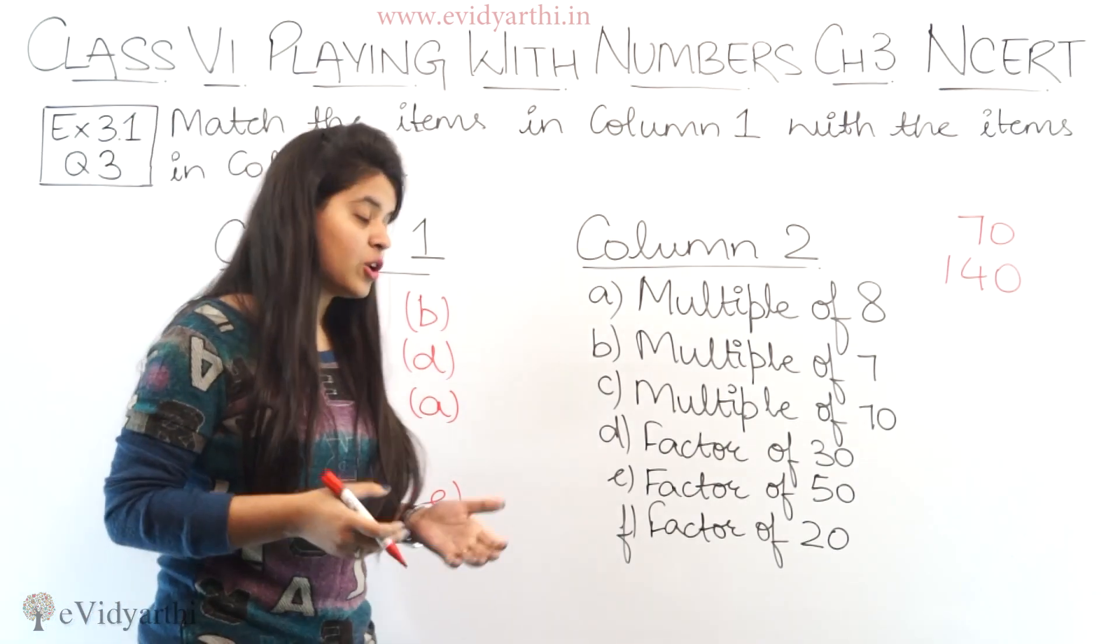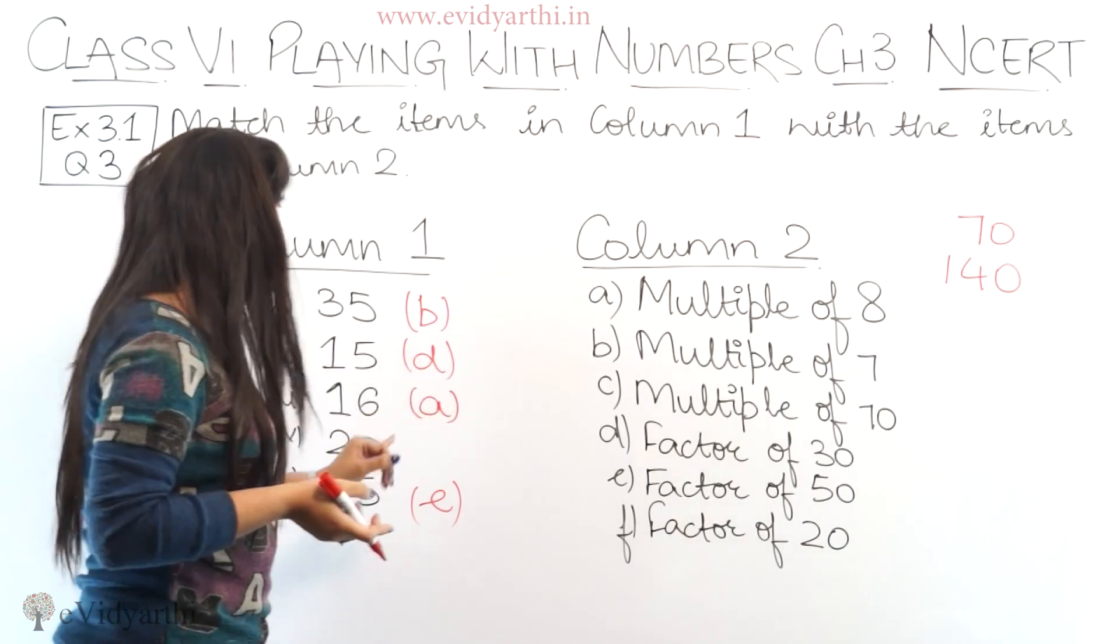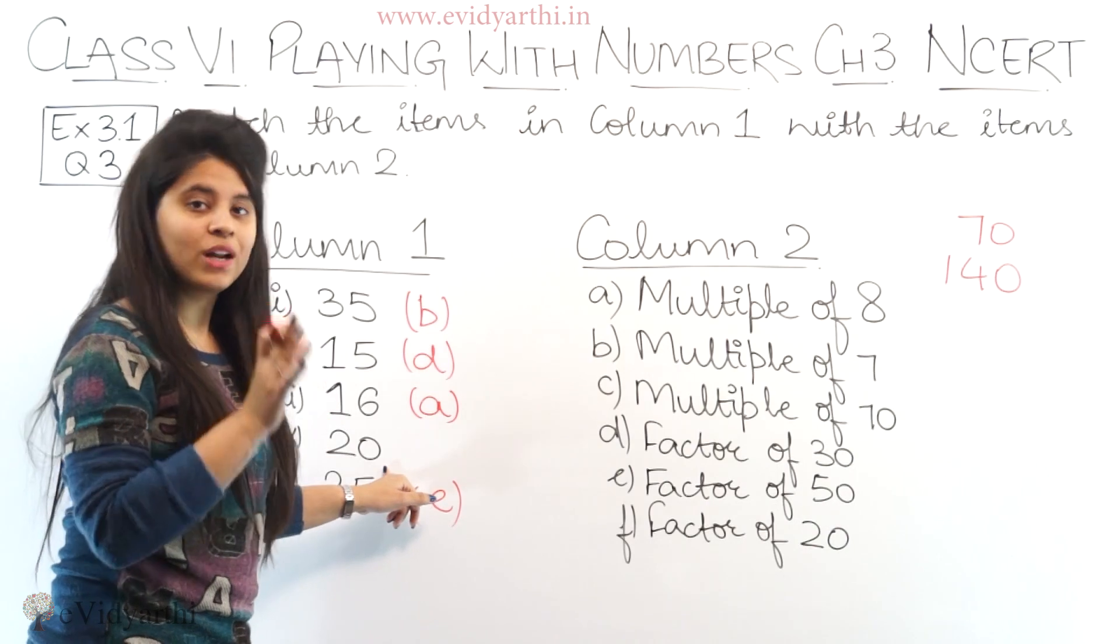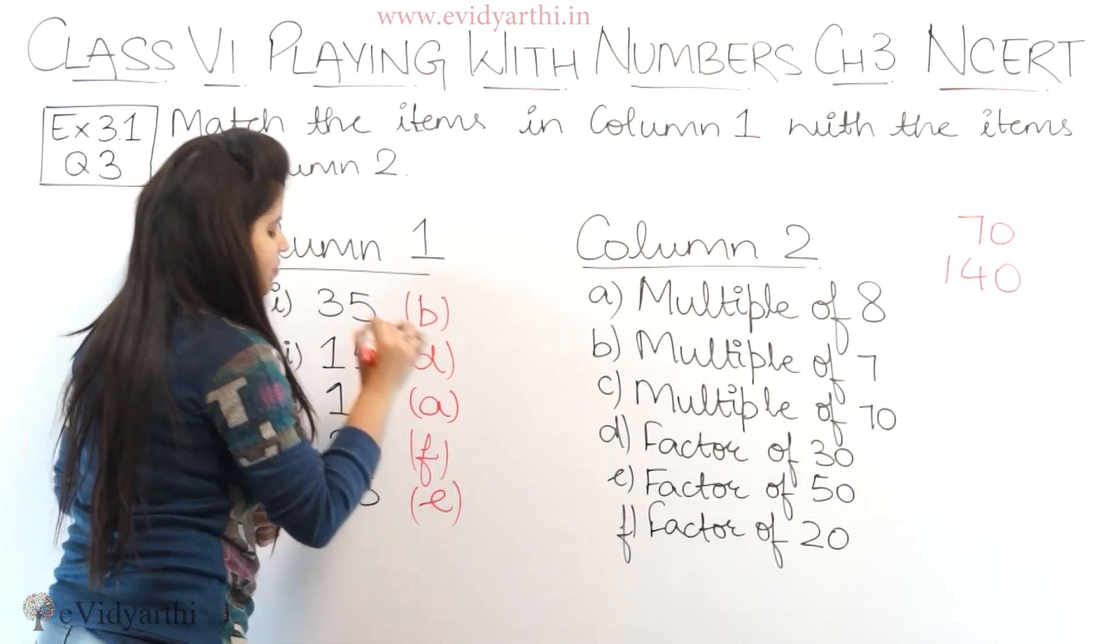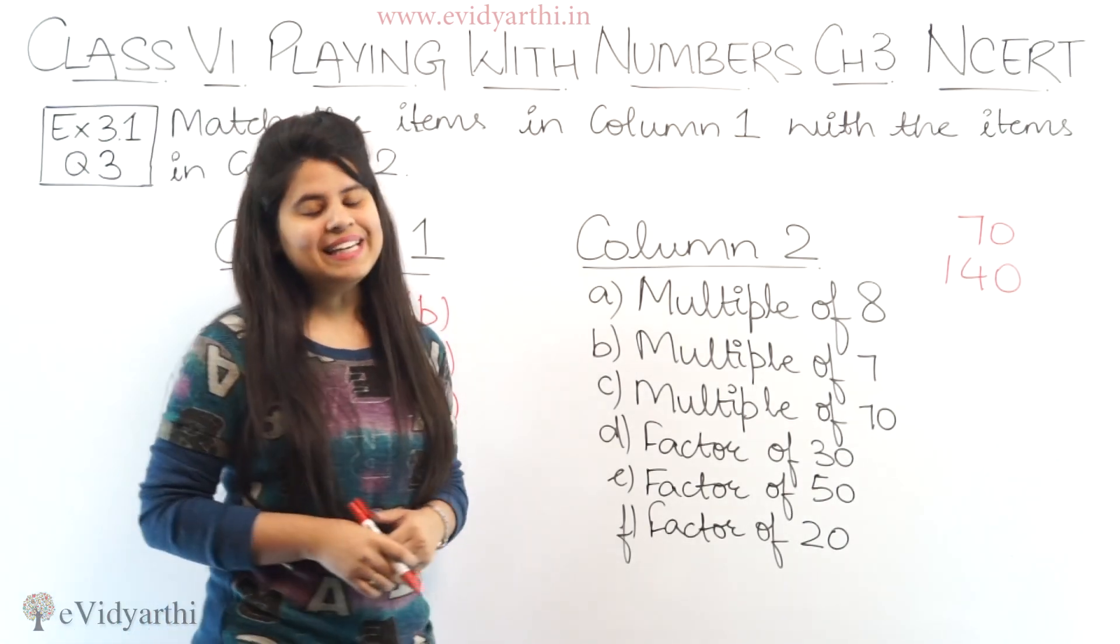Now, the last part is factor of 20, meaning in that number's table, 20 should come. We have 20 here. And we know that every number's factor includes that number and 1. So we will say this is 20's factor. This was question number 3. Now, let's come to the next question.